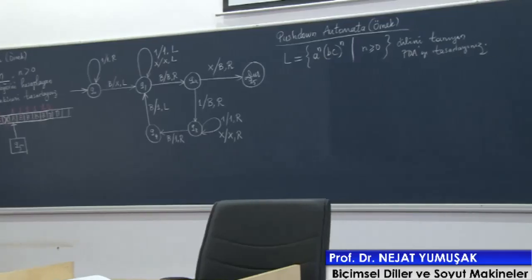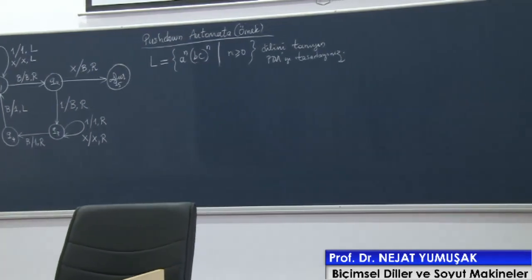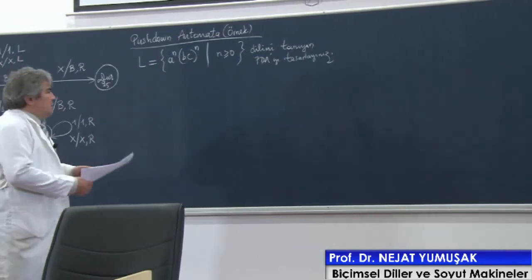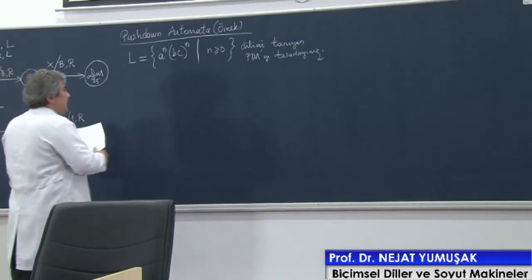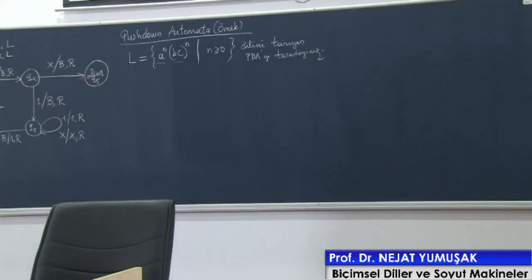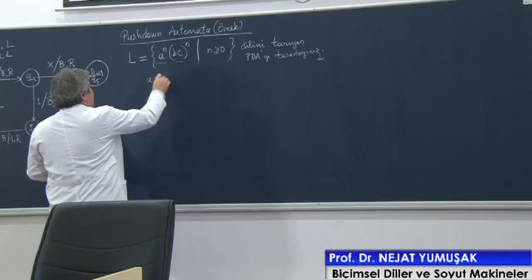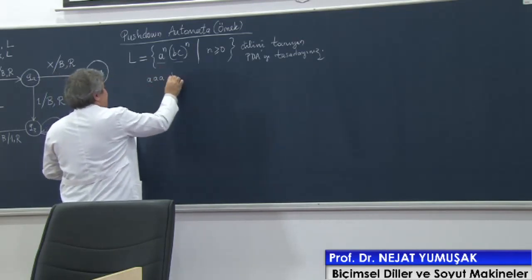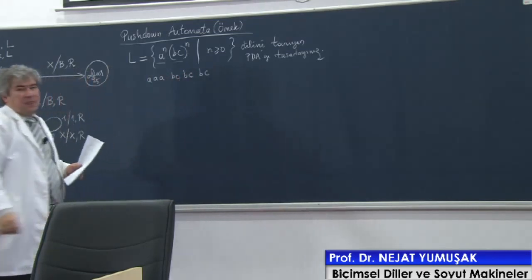Bu dili daha önceki çözdüğümüz örneklere benziyor. Çünkü bakınız, biz daha önce A üzeri N, B üzeri N gibi örnekler çözmüştük. Burada diyor ki A üzeri N, B, C üzeri N. Dilerseniz yine bir örnek katar oluşturalım. Buna karşılık ne olması lazım? B, C, B, C, B, C. Bu doğru bir katar — yani bu tanıma uygun bir katar.